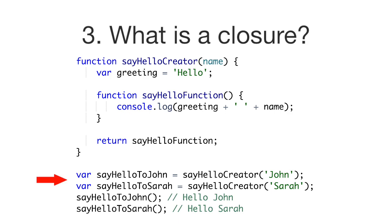We can create as many sayHello functions as we want for different names by simply calling sayHelloCreator with the name of the person we want to say hello to. This closure example helps keep your code concise and clean — we don't need to redefine a new function for every new name.